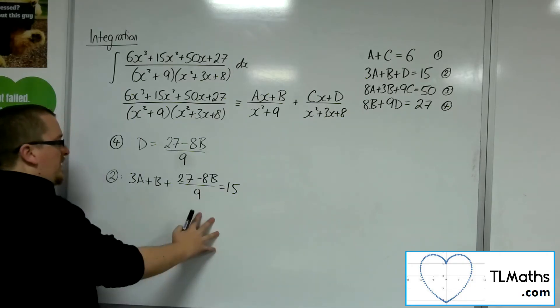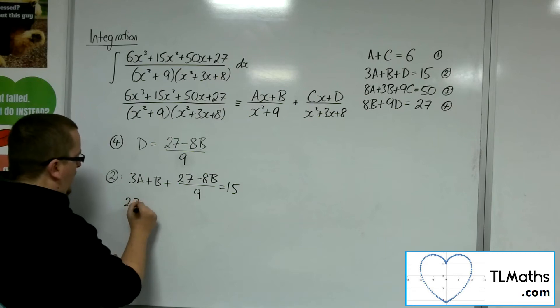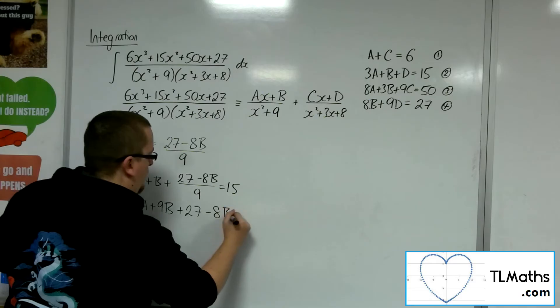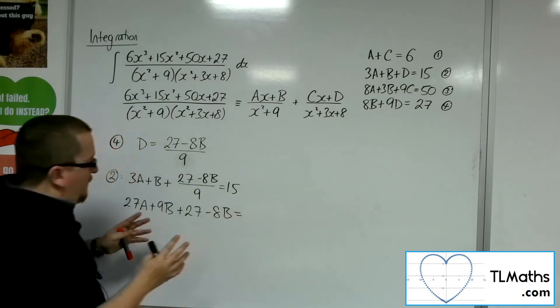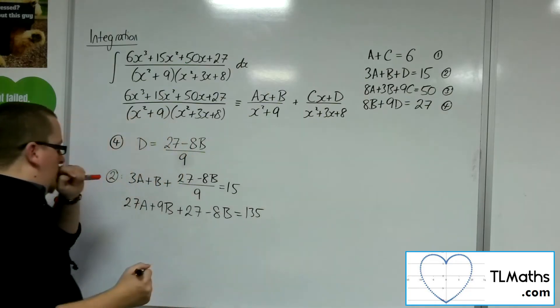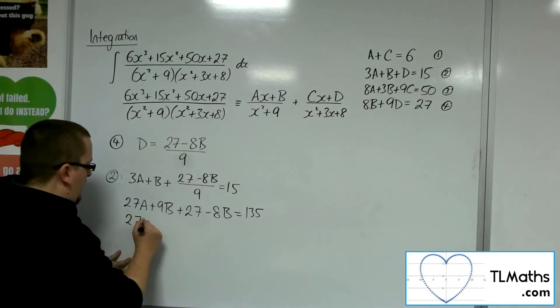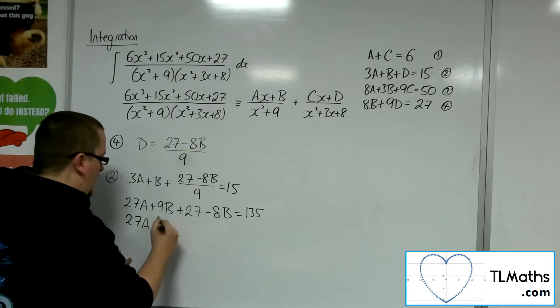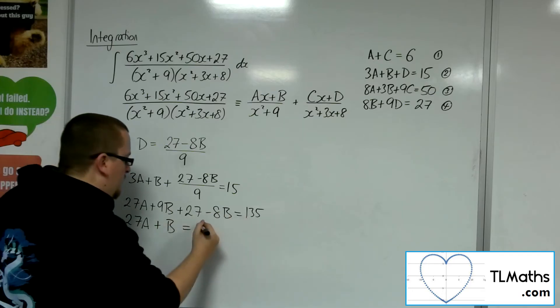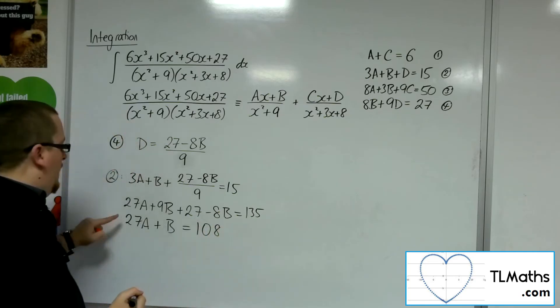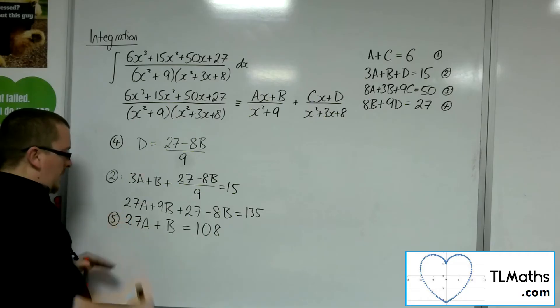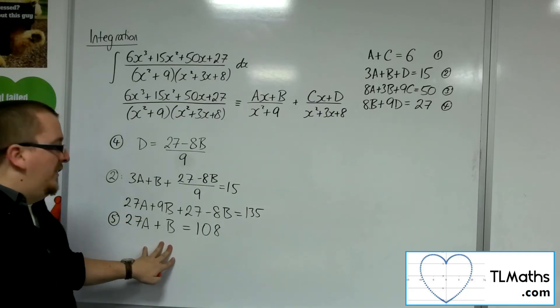So if I multiply everything by 9, I'm going to get 27a plus 9b plus 27 minus 8b is equal to 9 lots of 15, which is 135. So I've got 27a, 9b take away 8b is just b, and then take 27 from both sides will leave me with 108. So here is equation number 5 that I can now use. It just has a and b in it.